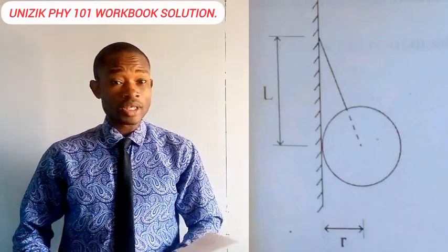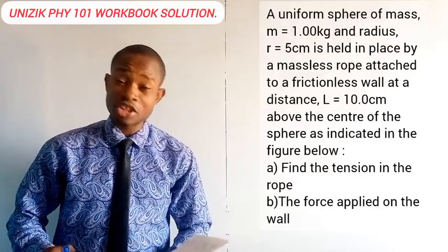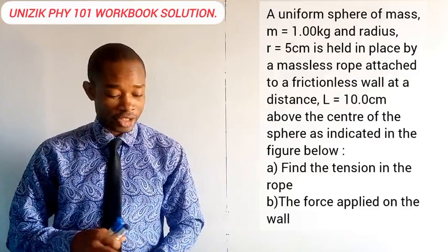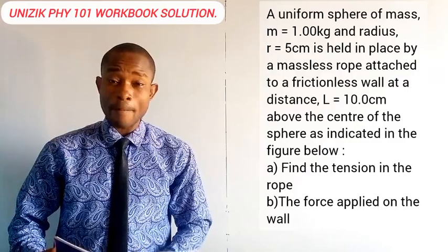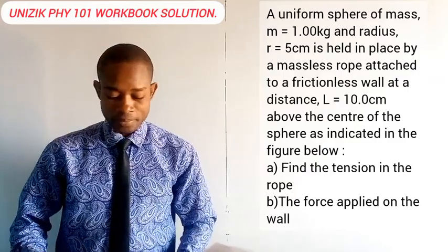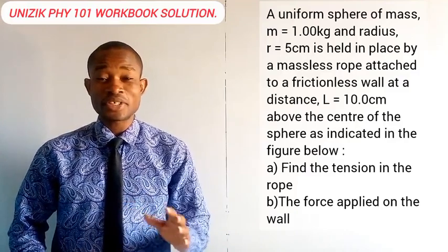Now in the workbook you could expect that you find the tension in the rope. That is a part of the question. Then the other part of the question is the force applied on the sphere by the wall. Now let's see how we handle this question. It's an interesting one.